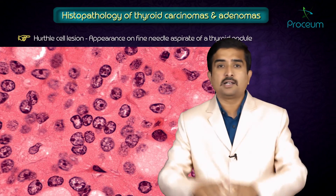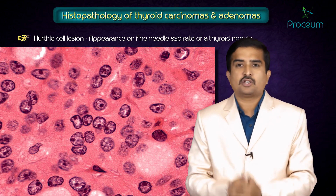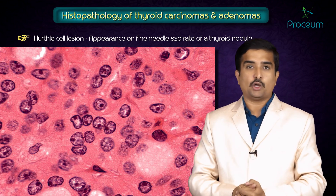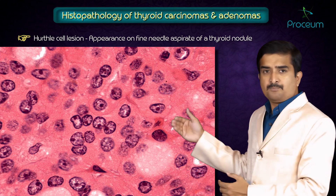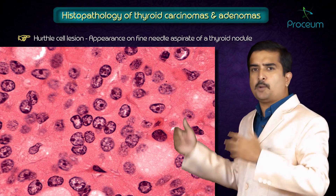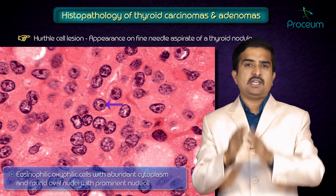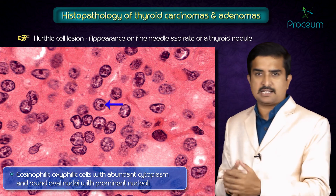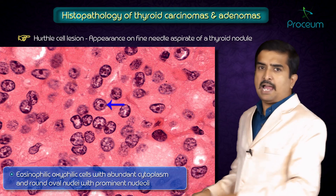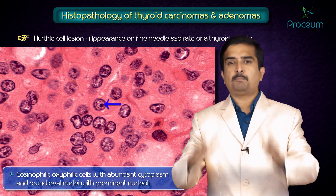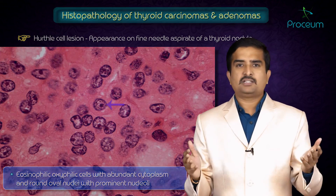The last image is a Hürthle cell lesion on fine needle aspirate of the thyroid nodule. This fine needle aspiration biopsy specimen shows mostly eosinophilic cells with abundant cytoplasm and round to oval nuclei with a prominent nucleolus. This concludes the discussion of gross and histopathological pictures related to various types of thyroid carcinomas and adenomas.